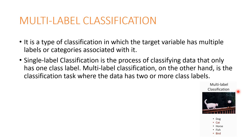Multi-label classification is a very important type. In this, the target variable has multiple labels or categories associated with it. When you talk about multi-label classification, you might ask: is there something called single-label classification? Yes, there is — it is the process of classifying data that has only one class label. Multi-label classification, on the other hand, is the classification task where the data has two or more class labels.